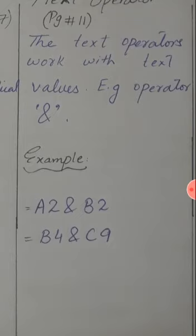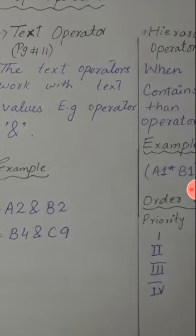A2. A2 is a cell reference. A is the column and 2 is the row number. A2 and B2, B4 and C9. The combination between the cell references are called text operators.